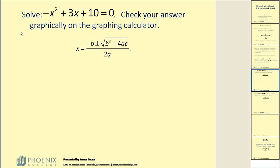First thing we're going to do is identify the values of a, b, and c. A is equal to the coefficient of x squared, b is equal to the coefficient of x, and c is equal to the constant 10.